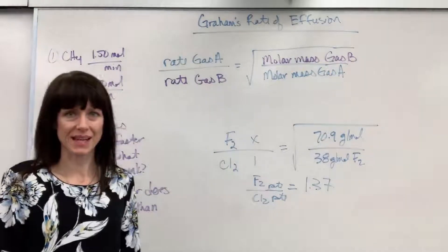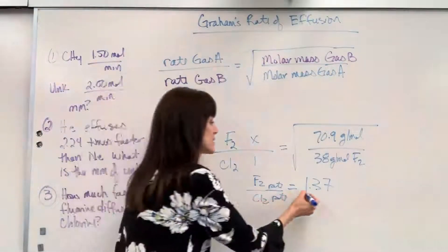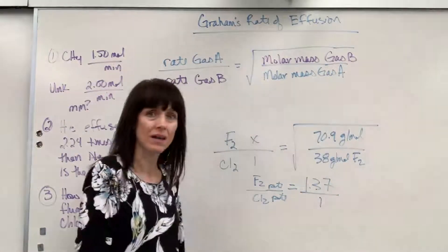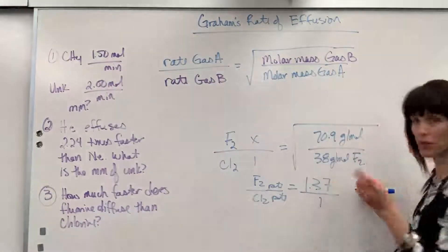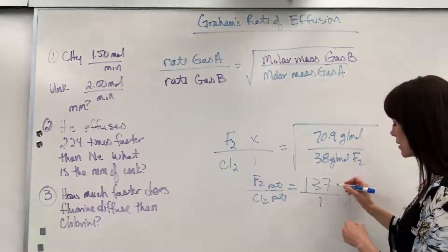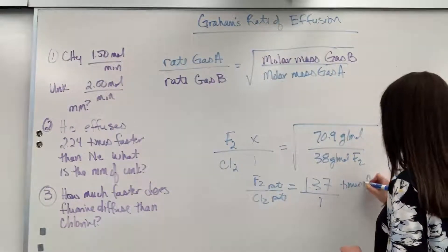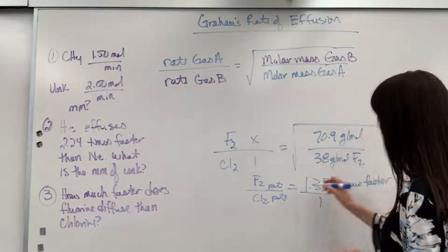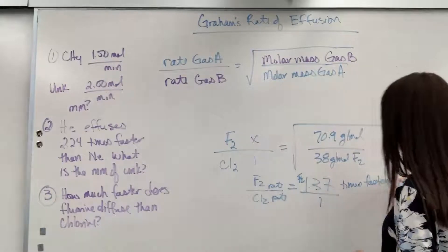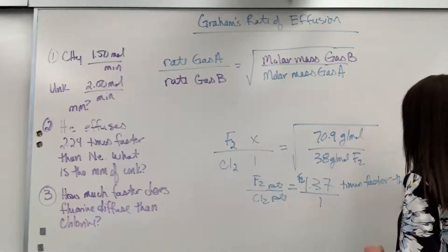So, how do you give this answer? Again, this is understood to be over 1. So, this tells us that fluorine diffuses 1.37 times faster. Times faster. That's going to be our fluorine than the chlorine.